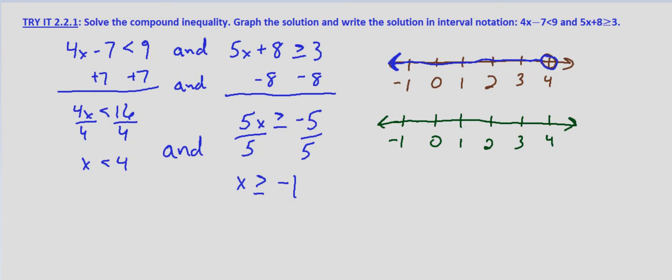Now with the second part of our compound inequality, we have x is greater than or equal to negative 1. So since it's inclusive, we have either a square bracket or a circle that's filled in, a dot that's filled in at negative 1. I'm going to use a closed dot, and it's greater than so we go to the right.